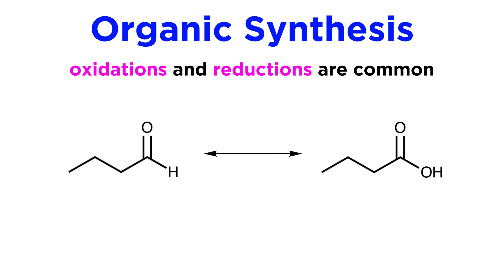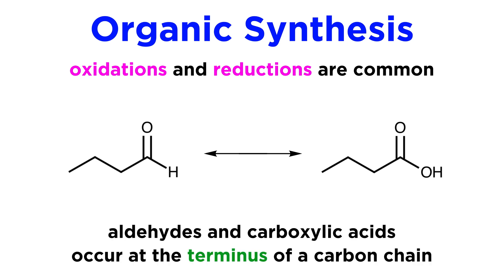there are plenty of transformations we can discuss. We could oxidize or reduce, and with aldehydes and carboxylic acids in particular, as they sit at a terminus of a molecule, there are many transformations we can employ to produce acid chlorides and other such functional groups.